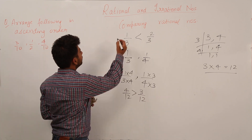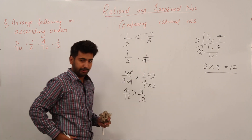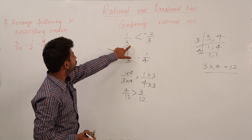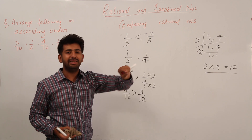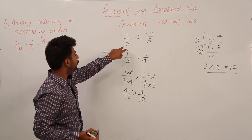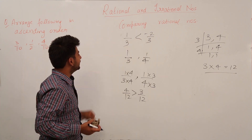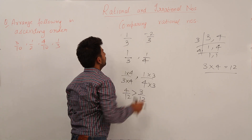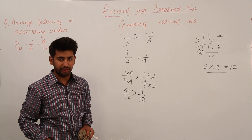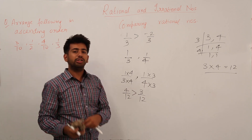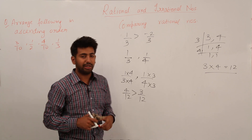What if we have 1/3 and −2/3? In this case the denominators are the same, but −2 is less than 1. When denominators are same, we compare only numerators, and since −2 is less than 1, that means 1/3 is actually greater than −2/3. Also note that all negative rational numbers are always less than positive rational numbers.